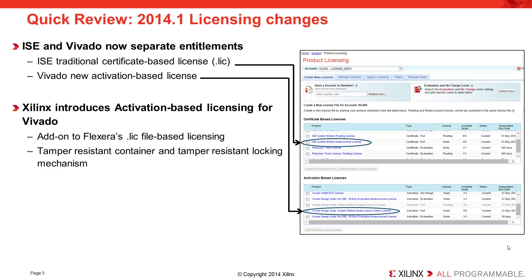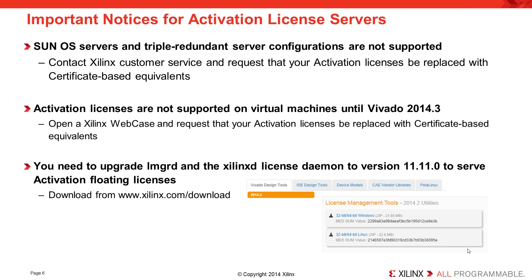Activation licensing consists of a tamper-resistant container called trusted storage as well as a tamper-resistant locking mechanism. Important notices for those using activation license servers: SunOS servers and triple redundant server configurations are not supported by activation. If you find yourself in that situation, contact Xilinx customer service and request that your activation licenses be replaced with certificate-based equivalents.